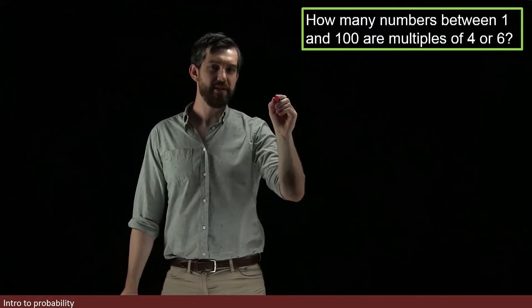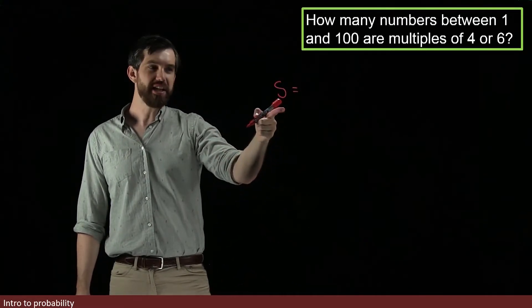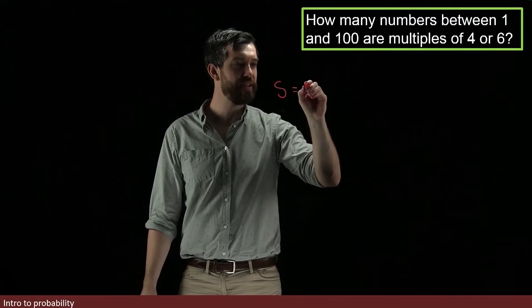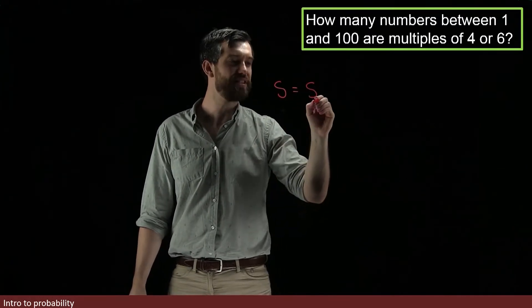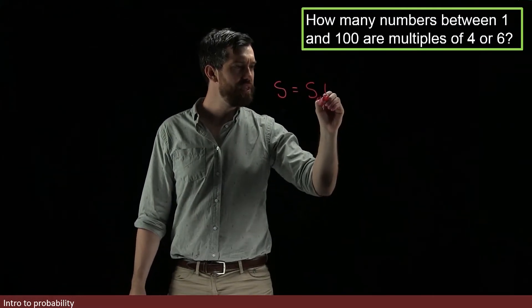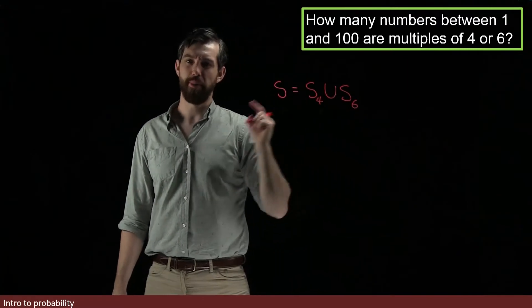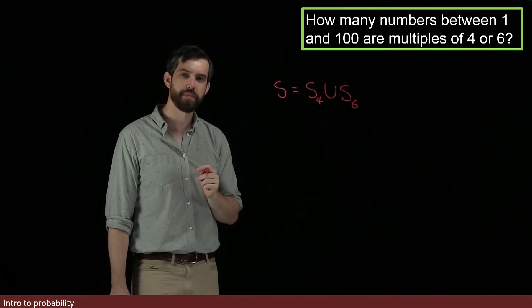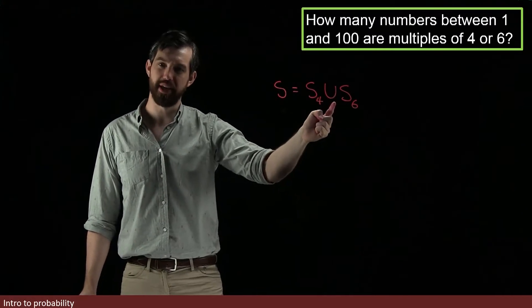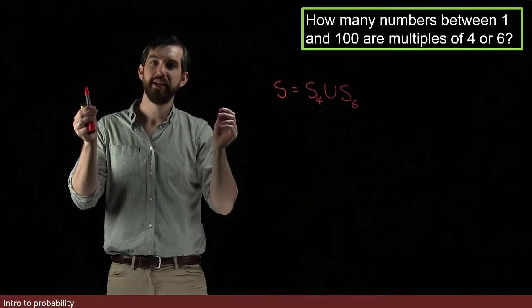I can take my total sample space, S, and I can divide it into a union of two different cases. It's going to be S sub 4, just so I remember that that's the one with multiples of 4, and then it's going to be union S sub 6 to denote the multiples of 6. However, I've given a curvy union symbol here because the multiples of 4 and the multiples of 6 are not disjoint.